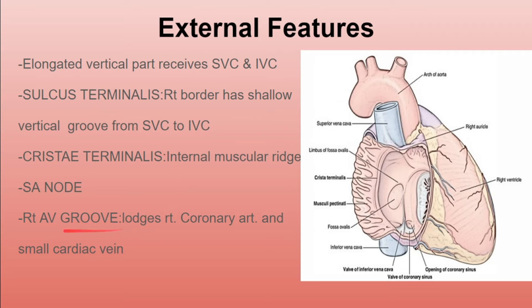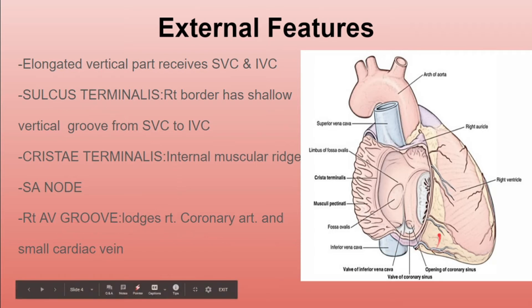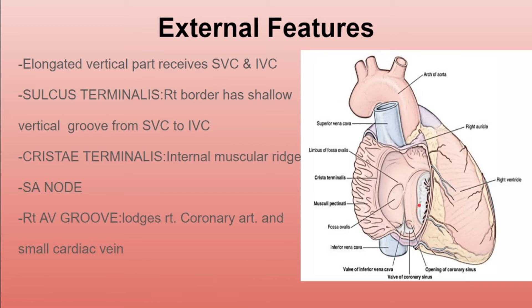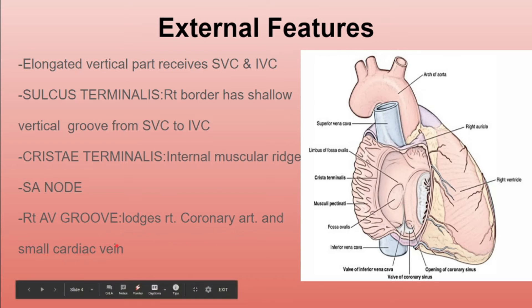The right atrioventricular groove is a groove that separates the right atrium from the right ventricle. It mainly lodges two structures: the right coronary artery and the small cardiac vein.